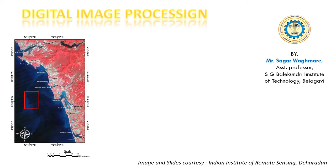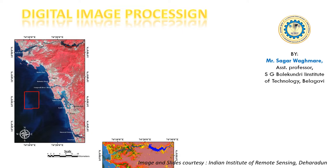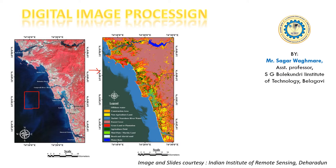Understanding and interpretation of this image is very essential in order to get clear information about what is present in the image. This interpretation technique will tell you how to interpret, what parameters to consider, and how to identify the features. Some features are associated with each other, and this will be cleared in digital image processing. This image has been interpreted and classified — this is called supervised classification.